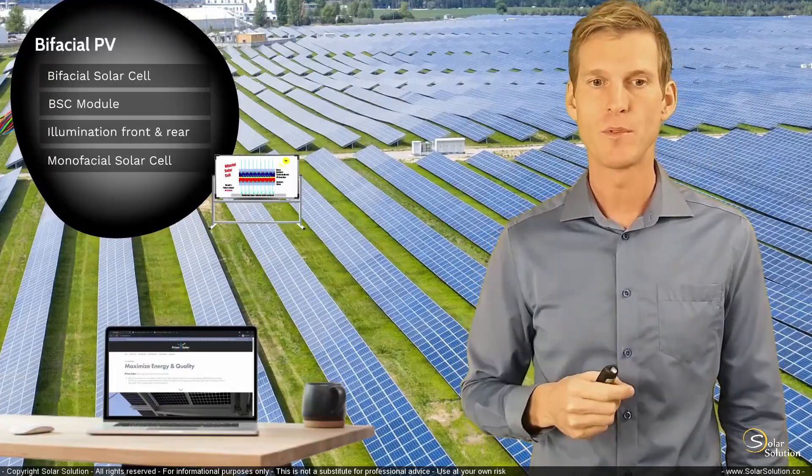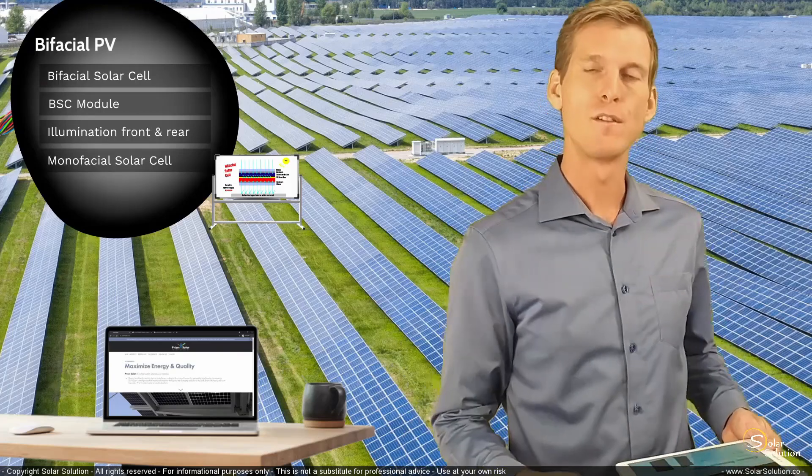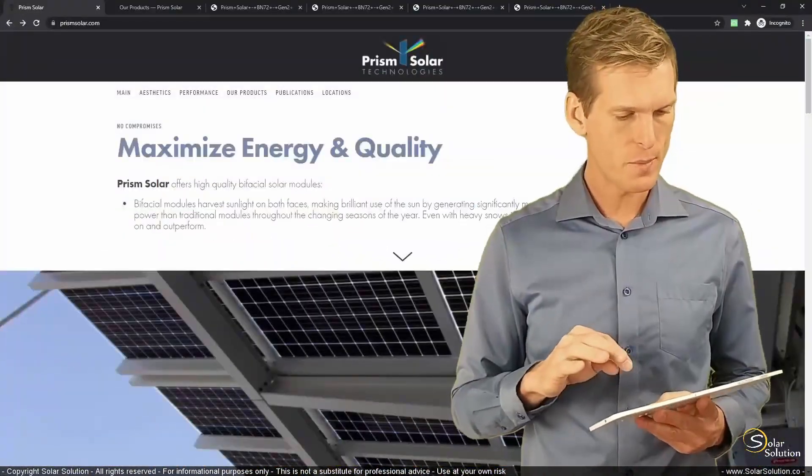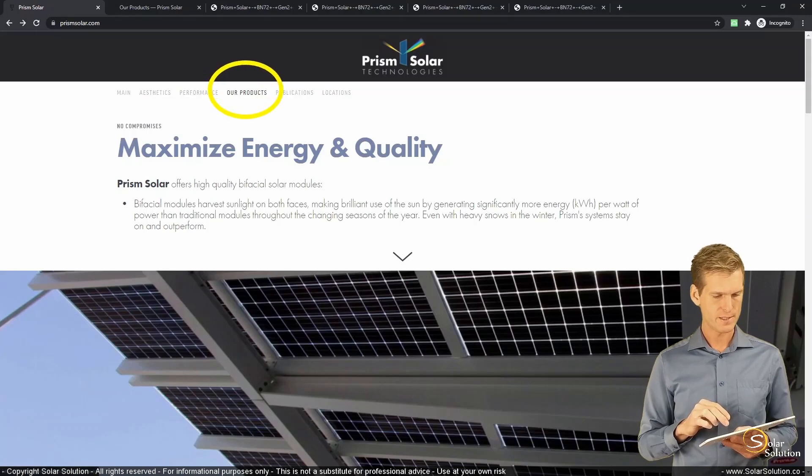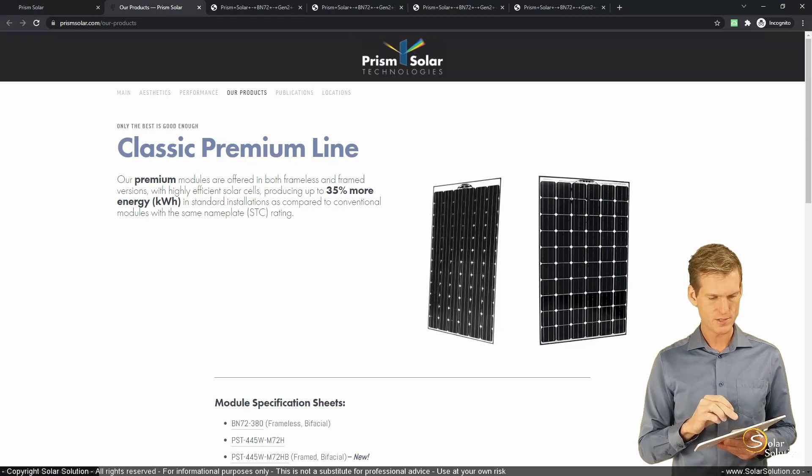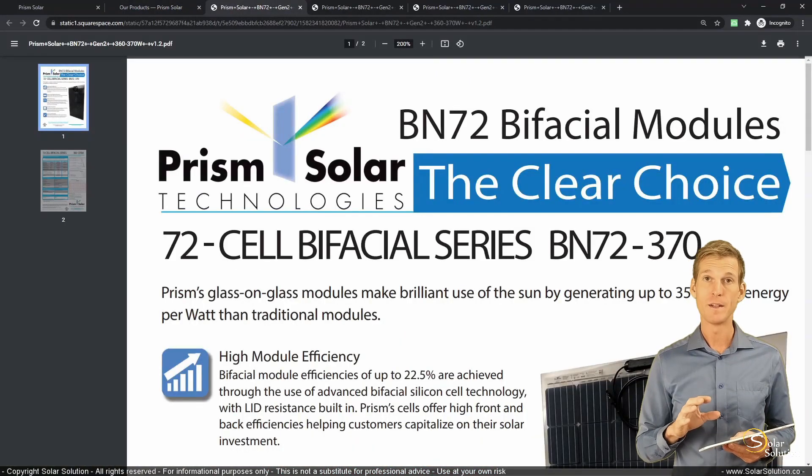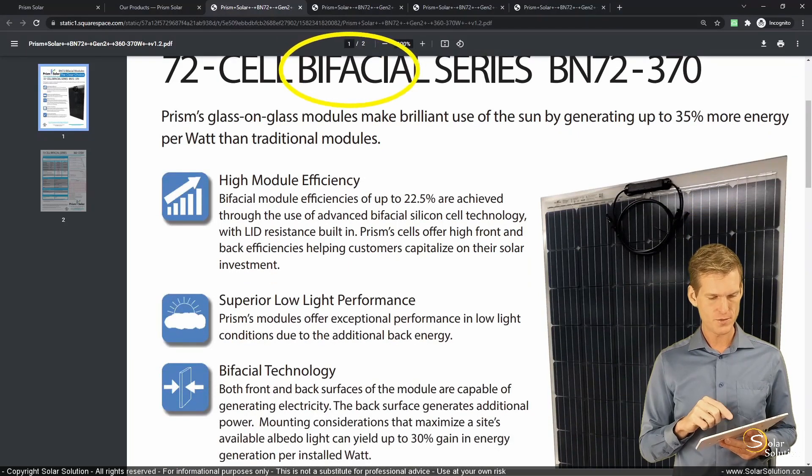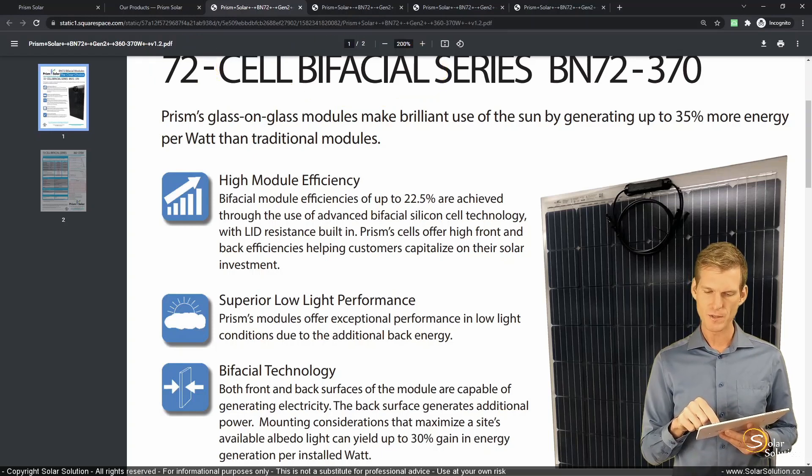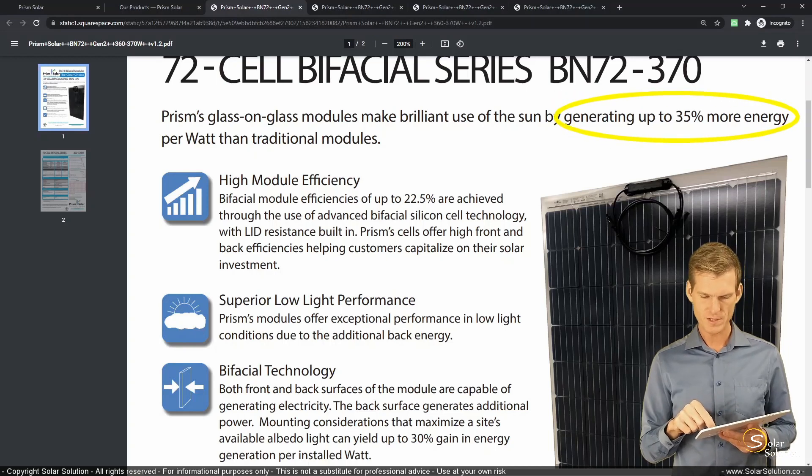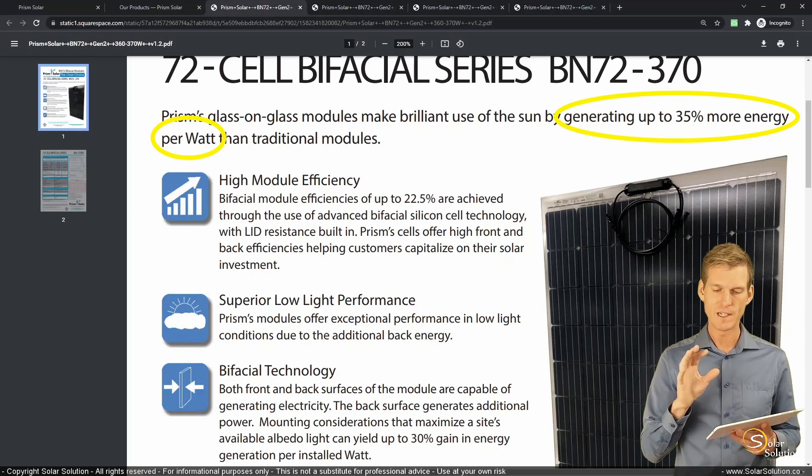So I think that's enough on the theory for bifacial solar cells and modules. Now let's go online and let's look at a practical example of a bifacial solar module. And let's try to find a specification sheet, dive into the specification sheet, and see what kind of values you could expect for bifacial solar modules. So I'm going to the website of prismsolar.com. I am not affiliated with Prism Solar. I'm going to the section that says our product. And then we just select one of their bifacial ones. So let's just select the first one, the BN72, in the range of 360 to 370 watts.